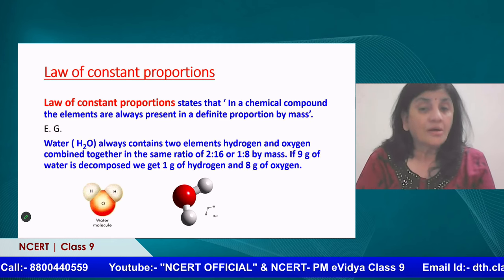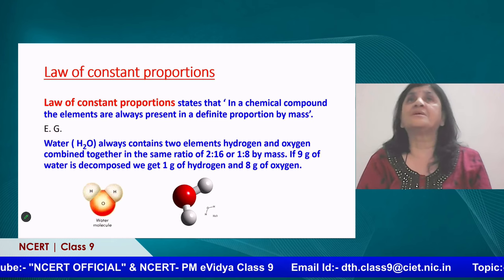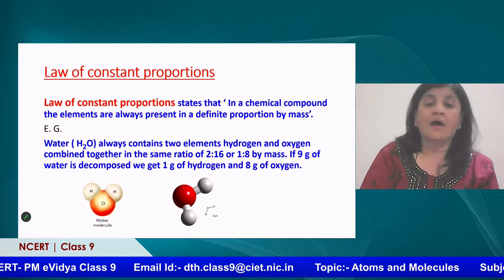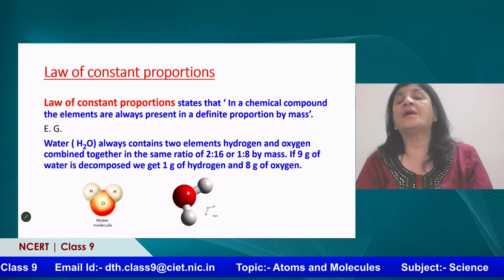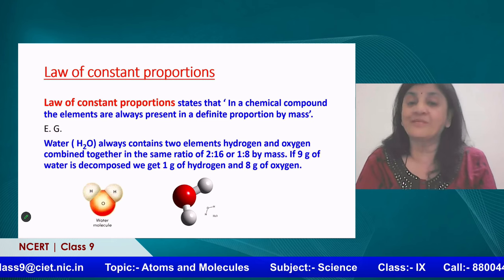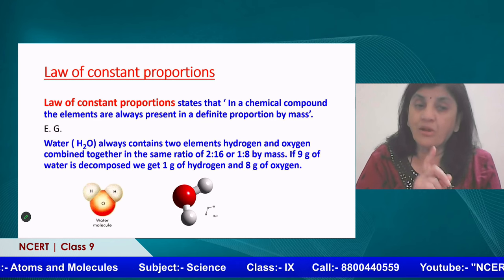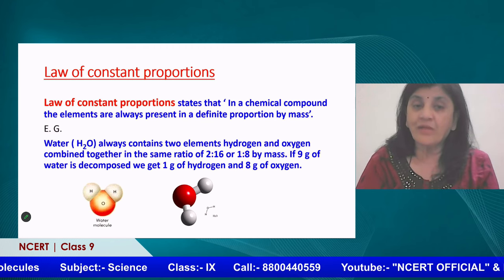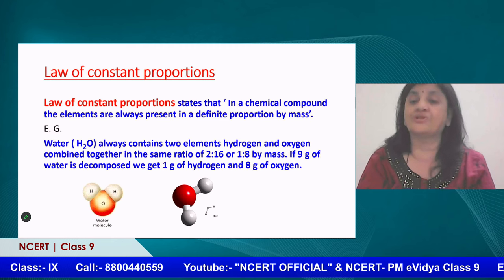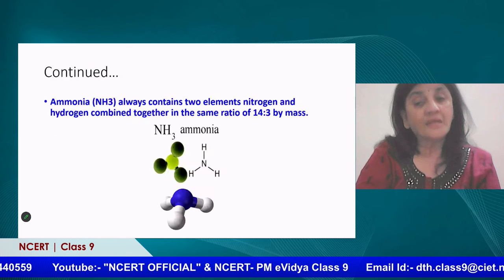You cannot make any change to this ratio. You cannot make water by combining hydrogen and oxygen in a 2 to 17 or 2 to 18 ratio — it is never possible. The law says that in a chemical combination, elements are always present in a definite proportion by their mass number. Let us take another example: the ammonia molecule.